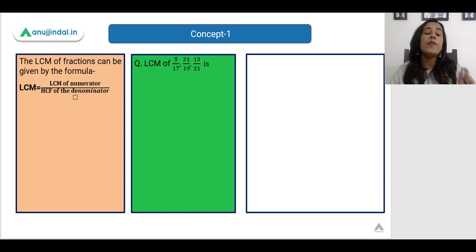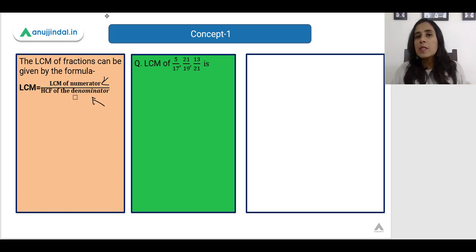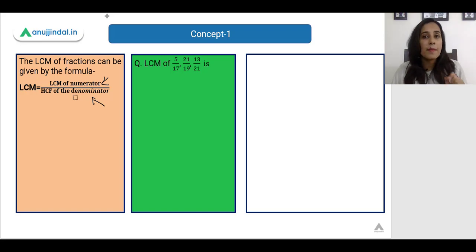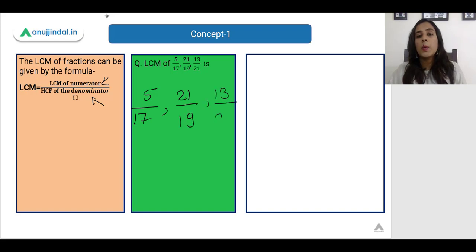Let us begin. The first concept is how to calculate the LCM of fractions. Whenever we are to calculate the LCM of fractions, all we have to do is take the LCM of the numerators and the HCF of the denominators. For example, we are asked to find the LCM of 5/17, 21/19, and 13/21.